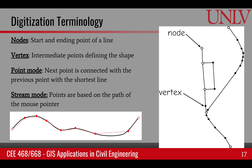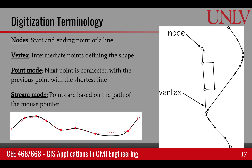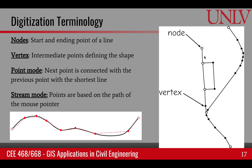When dealing with digitization, there are certain terms we use. When we start or end a line, the starting or ending point is called a node — indicated by circles at the ends of lines. The vertex refers to all the intermediate points defining the shape of the line; these black dots are all vertices.